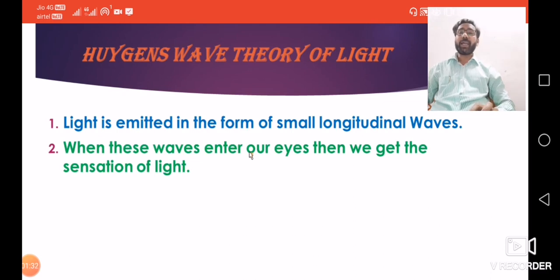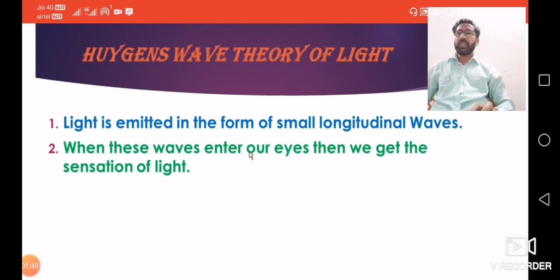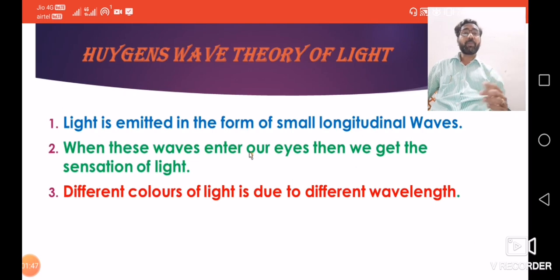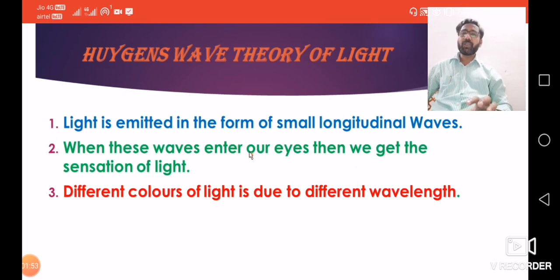Even when our eyes are closed, these small longitudinal waves are able to pass through. Now, as we know in Newton's corpuscular theory, there are different colors of light due to different sizes of particles. Here, since longitudinal waves are considered, different colors of light are due to different wavelengths.